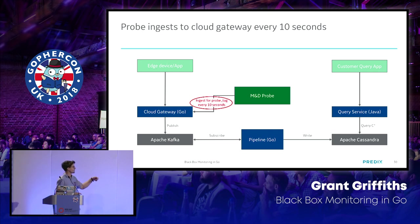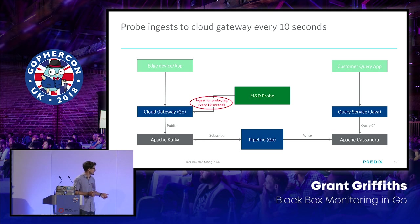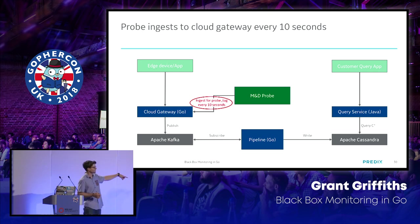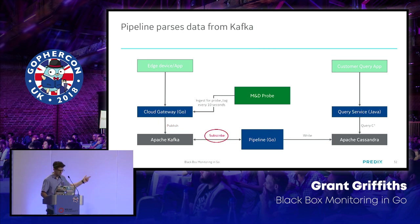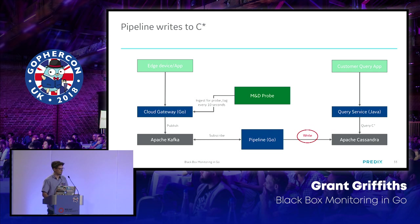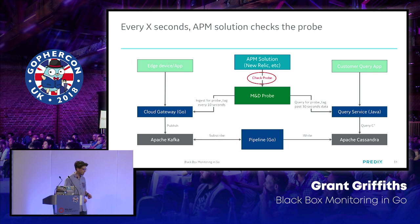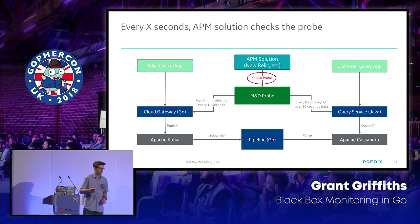The Monitoring and Diagnostics probe ingests data to our probe tag — a way of identifying a data point — every 10 seconds. Every 10 seconds it goes to the cloud gateway, which passes it off to Kafka. We subscribe to the Kafka topic with the pipeline, then write it all to Cassandra. The probe app is constantly simulating a sensor in the field continuously ingesting temperature data.